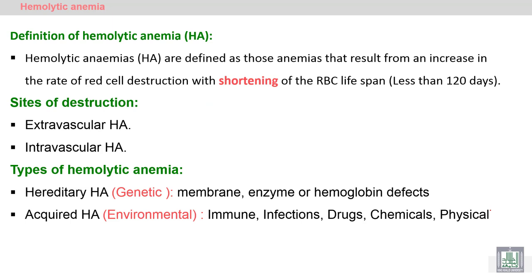Hemolytic anemia is anemia due to shortening of the lifespan of red blood cells — normally 120 days. The site of destruction may be extravascular in the spleen and liver by macrophages, or intravascular inside the blood vessels.